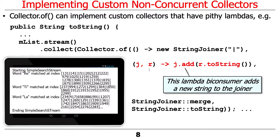A student asks how you know the types for the lambda parameters. The instructor explains that if you expand the concise form in IntelliJ or Android Studio, it would show `StringJoiner j, Result r`. The first type is whatever the supplier factory method produced as the accumulator type, and the second is whatever type the stream elements are. The concise form was kept because the expanded version was a bit verbose.